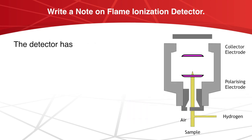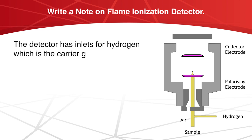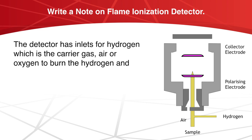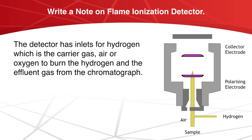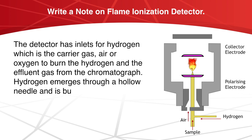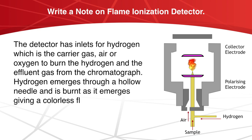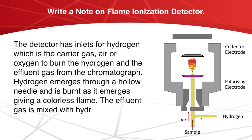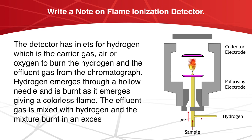The detector has inlets for hydrogen, which is the carrier gas, and air or oxygen to burn the hydrogen, along with the effluent gas from the chromatograph. Hydrogen emerges through a hollow needle and is burned as it emerges, giving a colorless flame. The effluent gas is mixed with hydrogen and the mixture burned in excess of air.